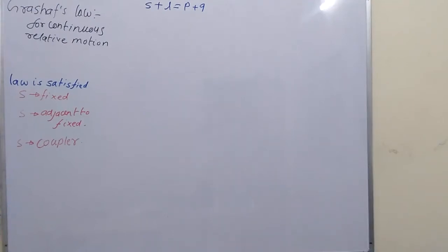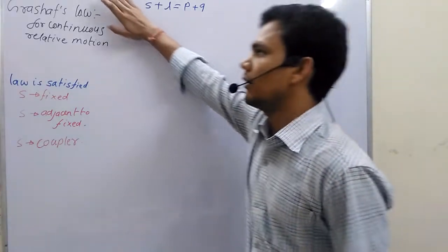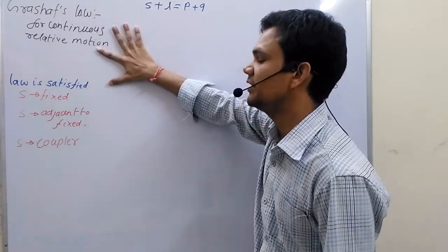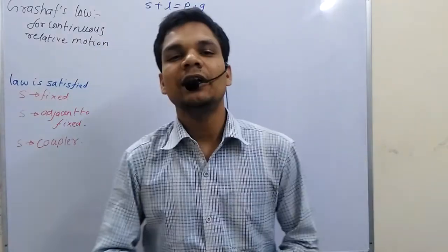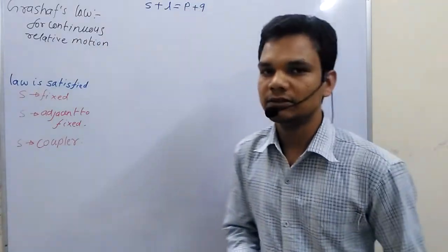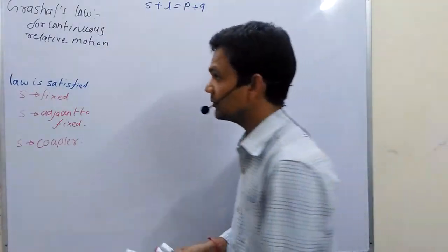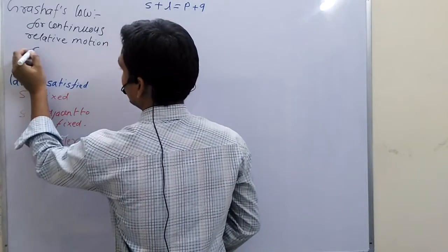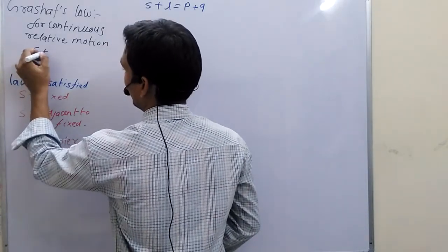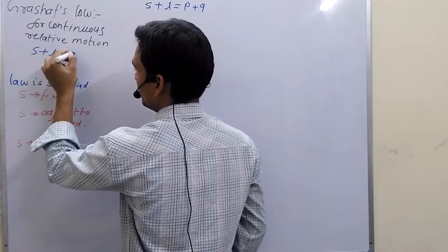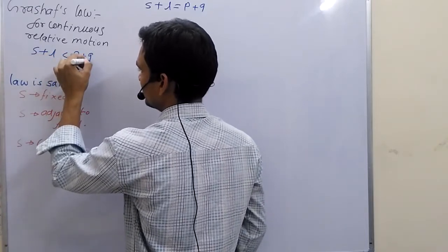Today we will discuss Grashof's Law. According to Grashof's Law, for continuous relative motion between the links of a mechanism, the summation of the smallest and the largest link is less than or equal to the other two links.